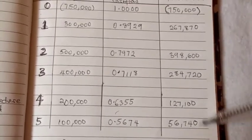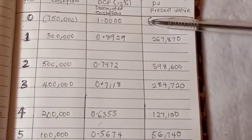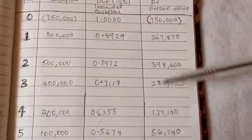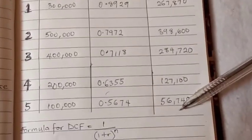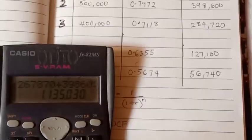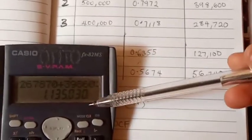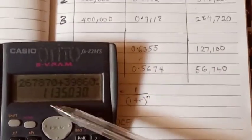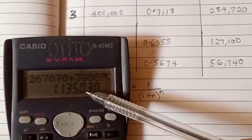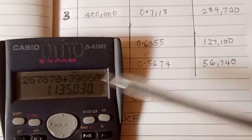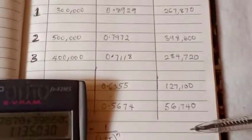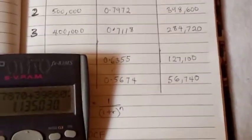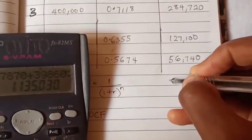The next thing is to sum this, excluding the initial cost, just this and this. So the sum total I got is 1,135,030 naira after summing all these. That is the total, so that's what you're going to put down here.